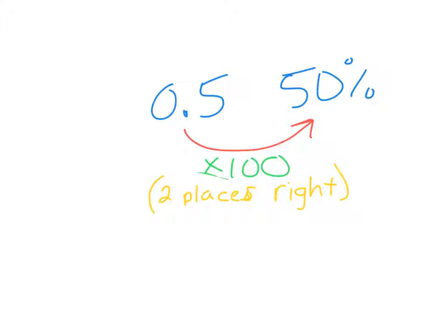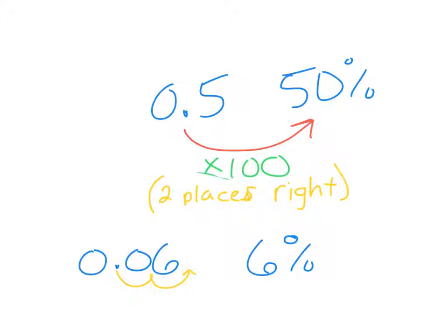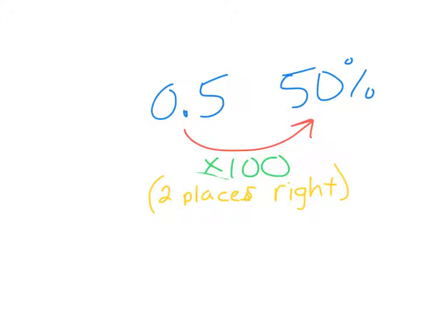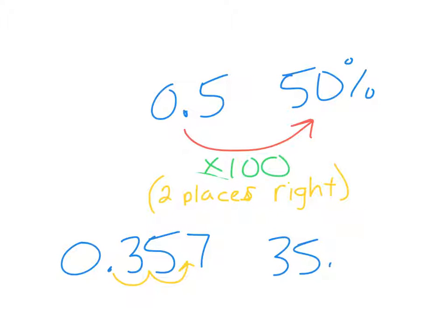Let's do another one. If I gave you 0.06 as a decimal and said to convert it to a percent: two places to the right gives us 6%. Another example: converting 0.357 to a percent — two places to the right makes that 35.7%. It's okay to have a decimal within the percent, as long as you made those two movements. Moving the decimal two places to the right converts it to a percent.